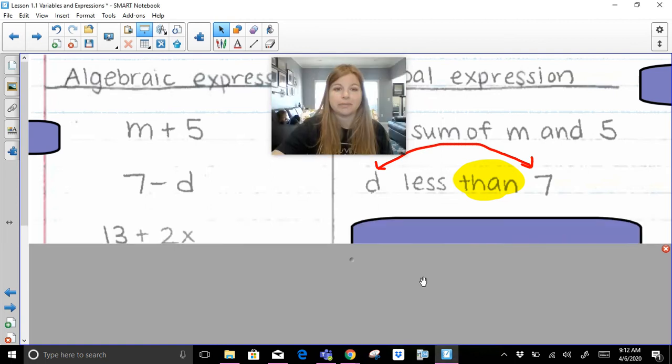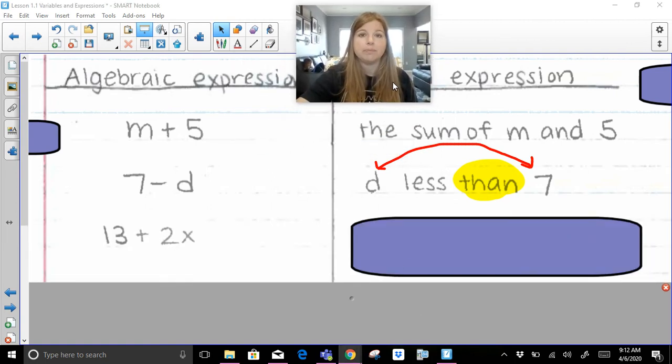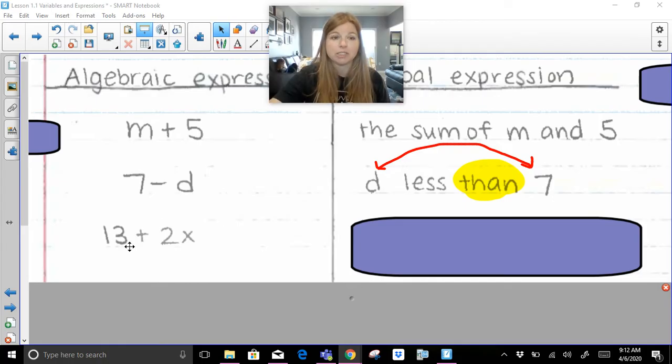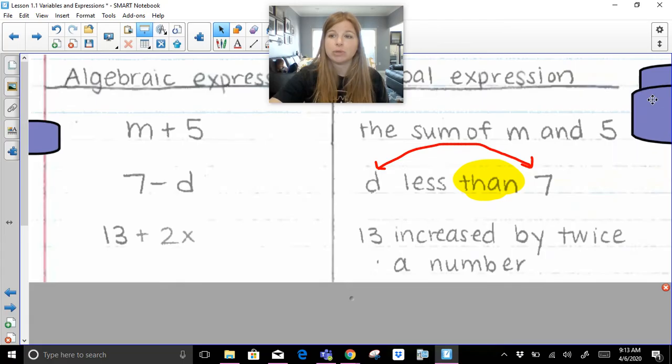The most basic way we could possibly say this expression here would just simply be 13 plus 2 times x. There's so many other ways that I could say things. I could say 13 added by 2 multiplied by x. I could say the sum of 13 and twice x. Remember the word twice means to multiply something by 2. Here's what I wrote. 13 increased by twice a number.